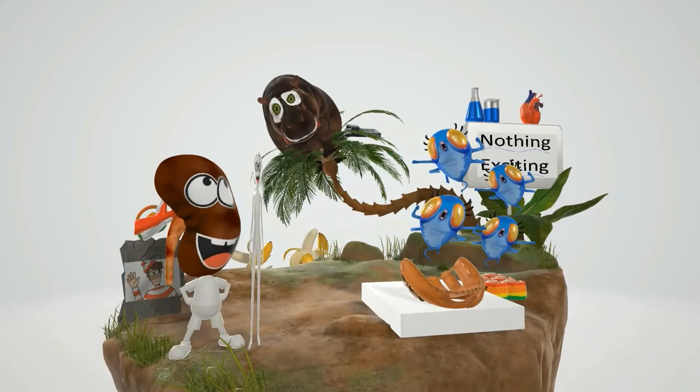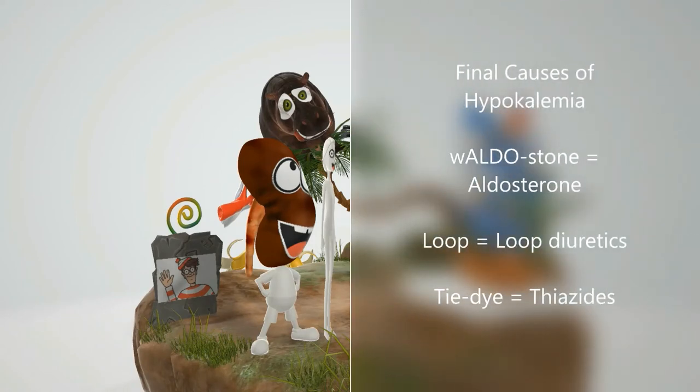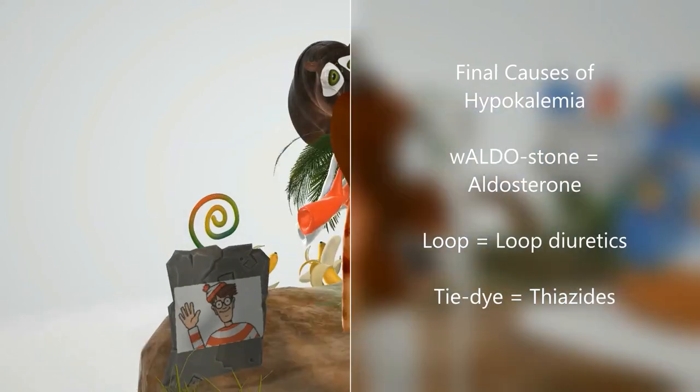Take a look behind this kidney over here. Did you notice this stone on the island with Waldo on it? The Waldo stone or the Aldo stone for aldosterone? In situations where somebody produces too much aldosterone, like primary hyperaldosteronism, then there's more potassium secretion by the principal cells, meaning more gets excreted and that means less potassium is retained, causing hypokalemia. Also, commonly used diuretics, like loop diuretics and thiazide diuretics. Represented by this loop over here, loop that's tie-dyed, loop for loop diuretics, and tie-dyed for thiazide diuretics, also increase potassium secretion and lead to hypokalemia.